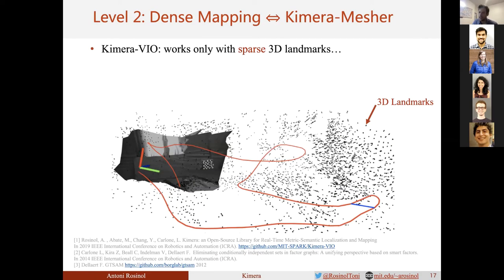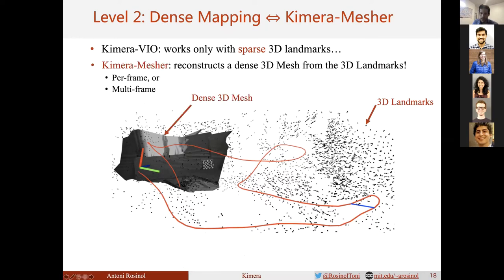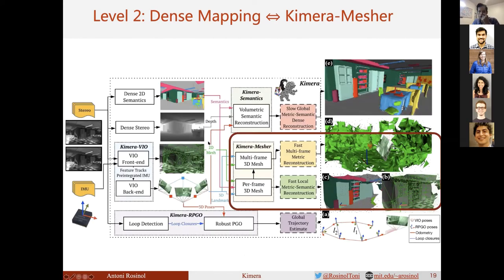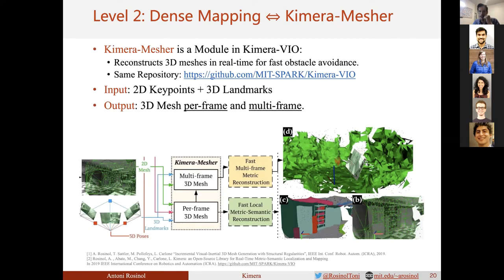The problem is that Kimera-VIO only generates a sparse 3D map, like the point cloud shown here. Therefore, we developed Kimera-Mesher, which reconstructs a dense 3D mesh from the 3D landmarks. Let's look at how Kimera-Mesher works. As input, Kimera-Mesher takes the 2D keypoints tracked by Kimera-VIO in the current frame and the estimated sparse 3D landmarks from Kimera-VIO.